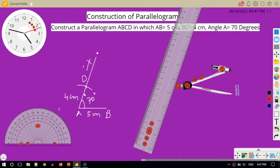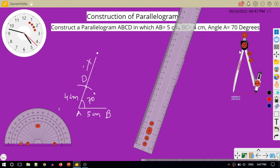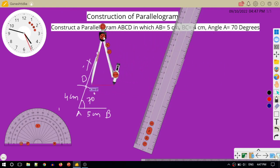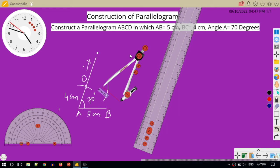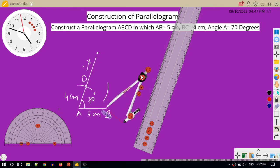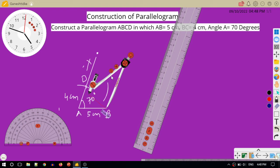Now, in the next step, with center D and radius 5 centimeters, I will draw an arc. So this is the arc.